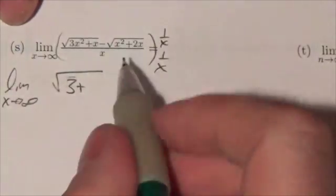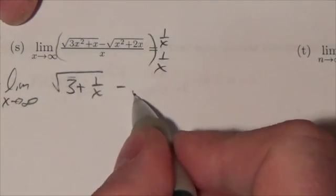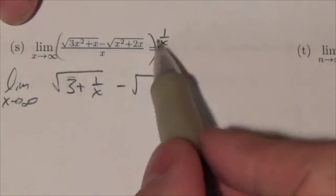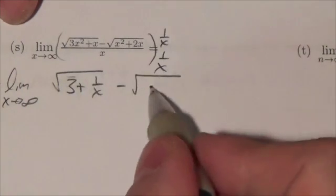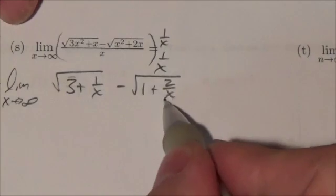This term right here will end up being 1 over x. Now because it distributes to both terms, I'm going to include it with both terms here. So the 1 over x becomes 1 over x squared. This is going to end up becoming x plus 2, sorry, 1 plus 2 over x.